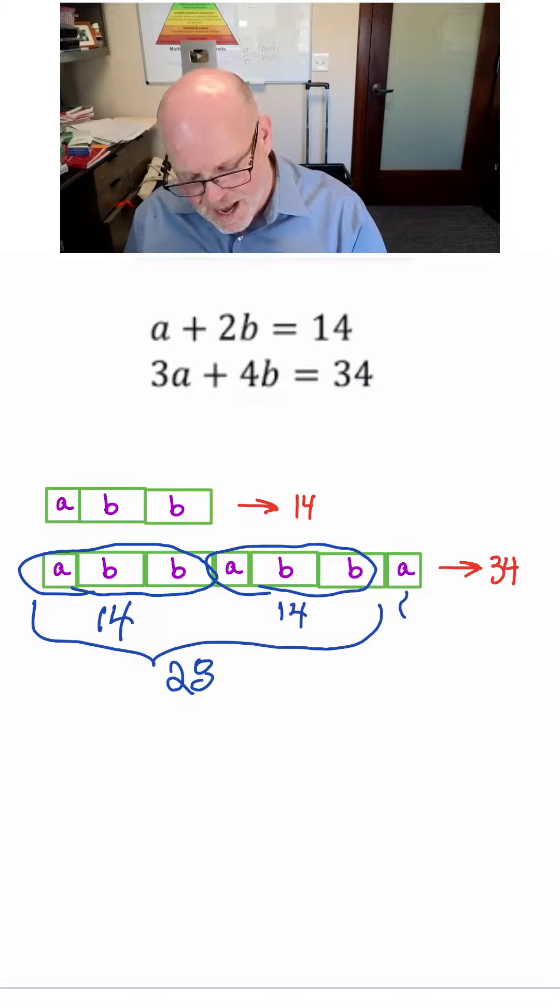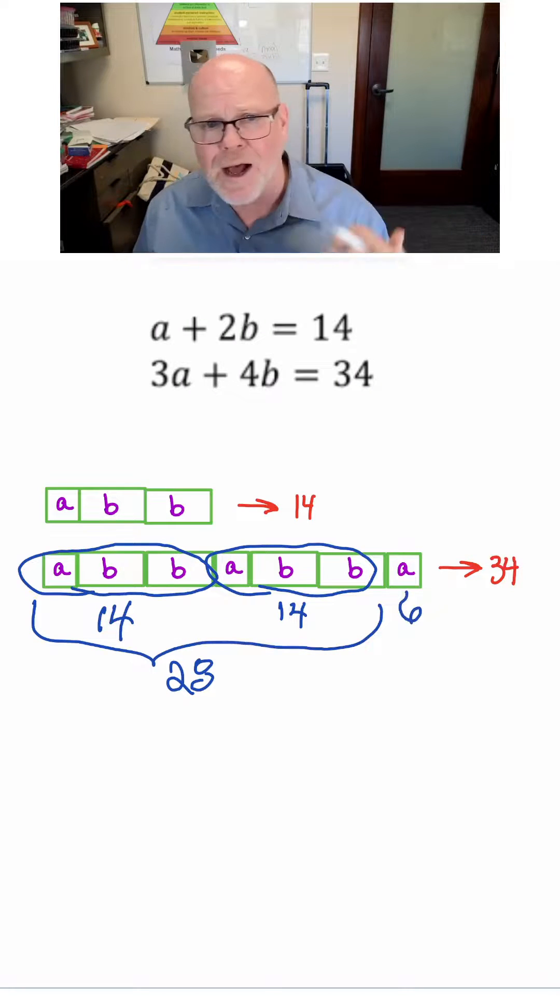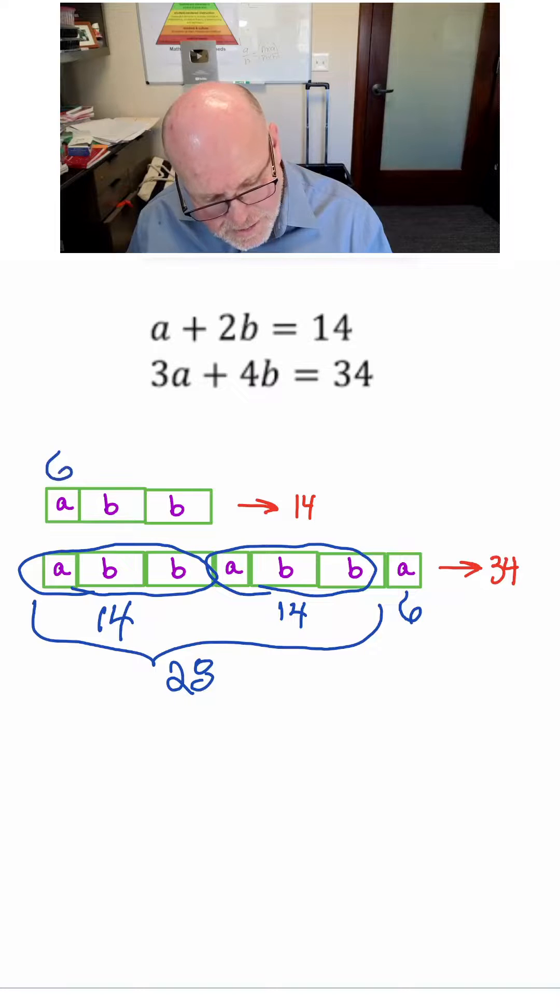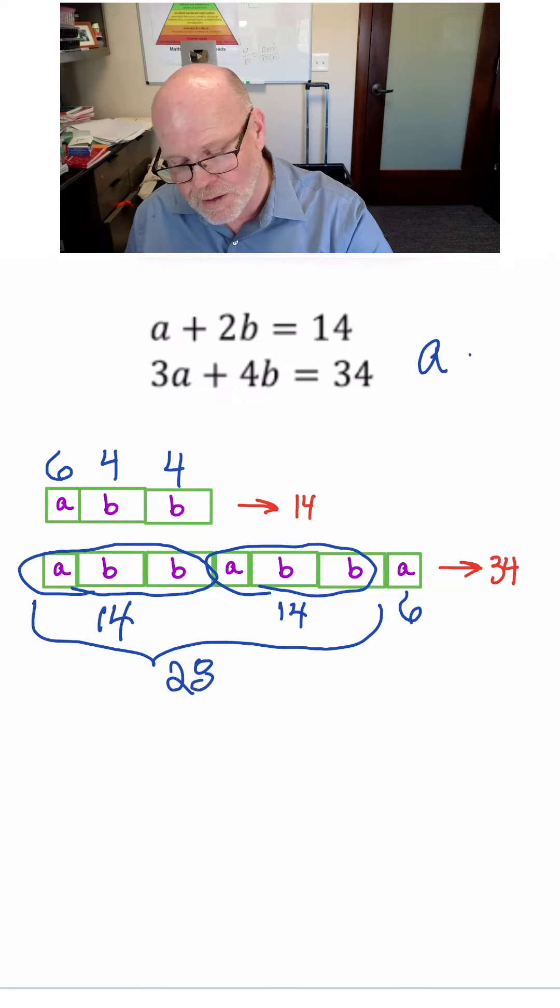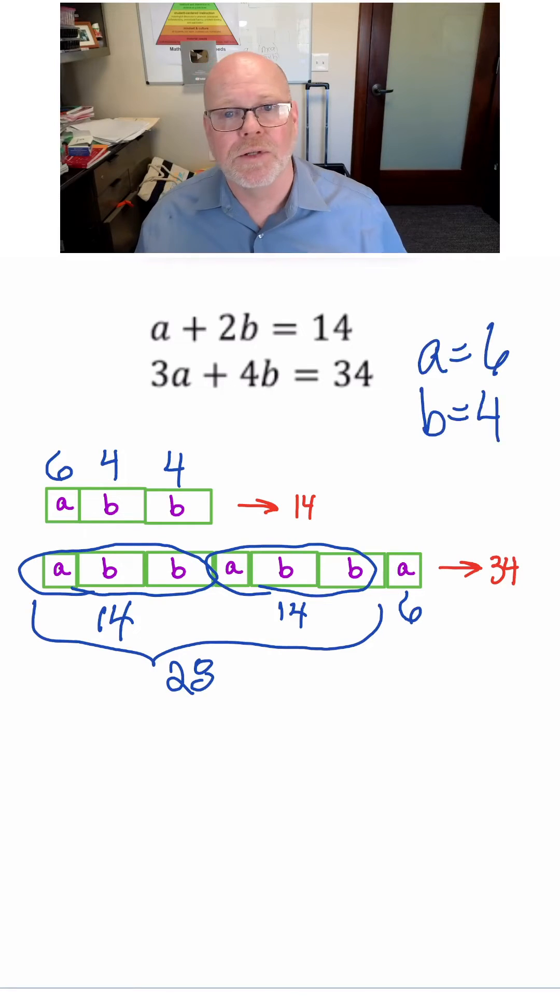that means this A has to be a 6. Now that we know that this A has to be a 6 and we know that this entire equation is supposed to be 14, that means these B's have to be 4 each. And now we know that A is equal to 6 and B is equal to 4.